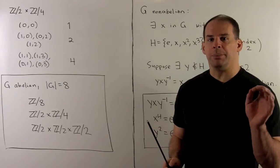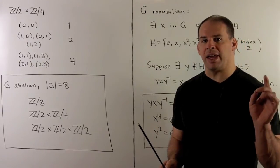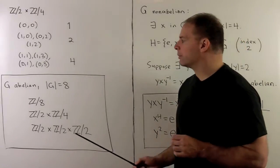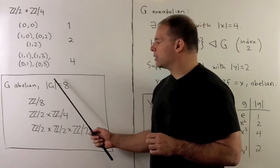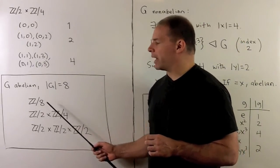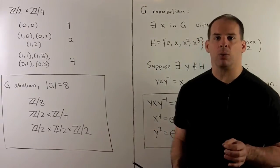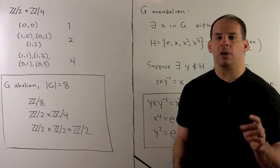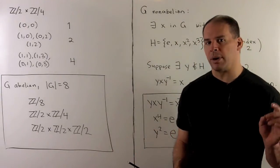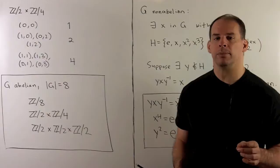That covers the abelian case. G is abelian with 8 elements and is isomorphic to either Z mod 8, Z mod 2 cross Z mod 4, or Z mod 2 cross Z mod 2 cross Z mod 2.